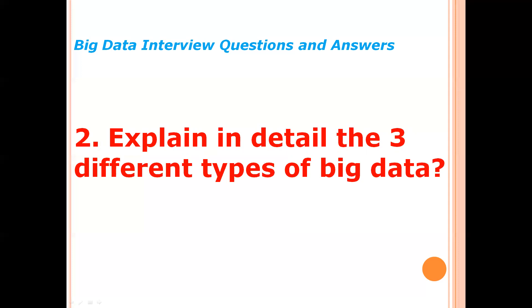First, structured data. Structured data can be defined as data that resides in a fixed field within a record. It is bound by a certain schema, so all the data has the same set of properties. Structured data is also called relational data. It is split into multiple tables to enhance the integrity of the data by creating a single record to depict an entity.